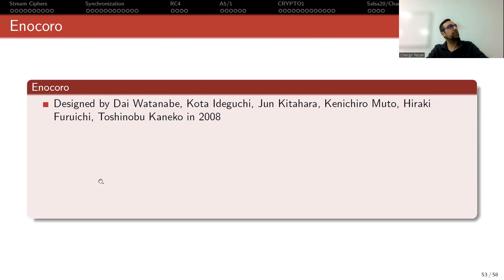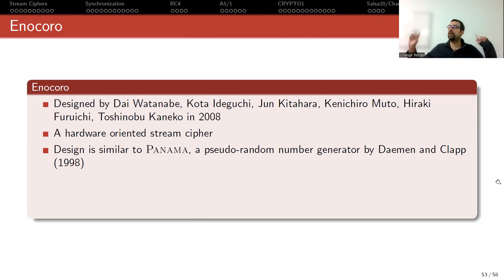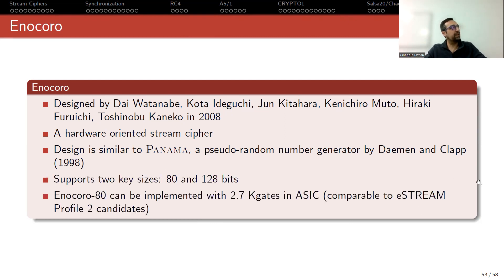Let's start with Enocoro and talk about these lightweight designs. It was designed by Watanabe, Idaguchi, Kitahara, Muto, and Furuchi Kaneoko in 2008 — a hardware-oriented stream cipher. The design is similar to Panama, the random number generator by Daemon and Club, which is a very old design generally used in hash function ideas. It supports two key sizes, 80 and 128 bits, and Enocoro can be implemented with 2.8 kilogates in ASIC, which is comparable to eStream Profile 2 candidates, so it is really small.